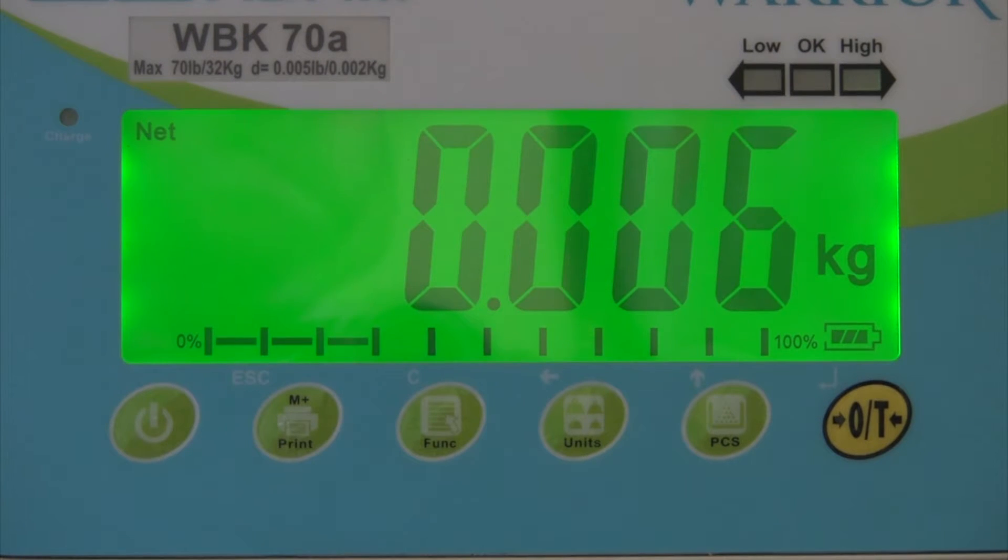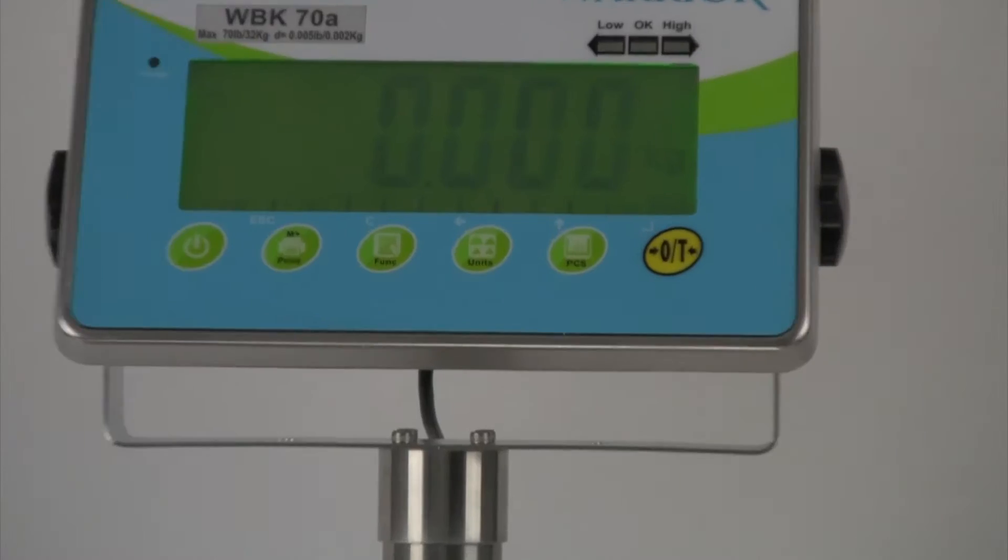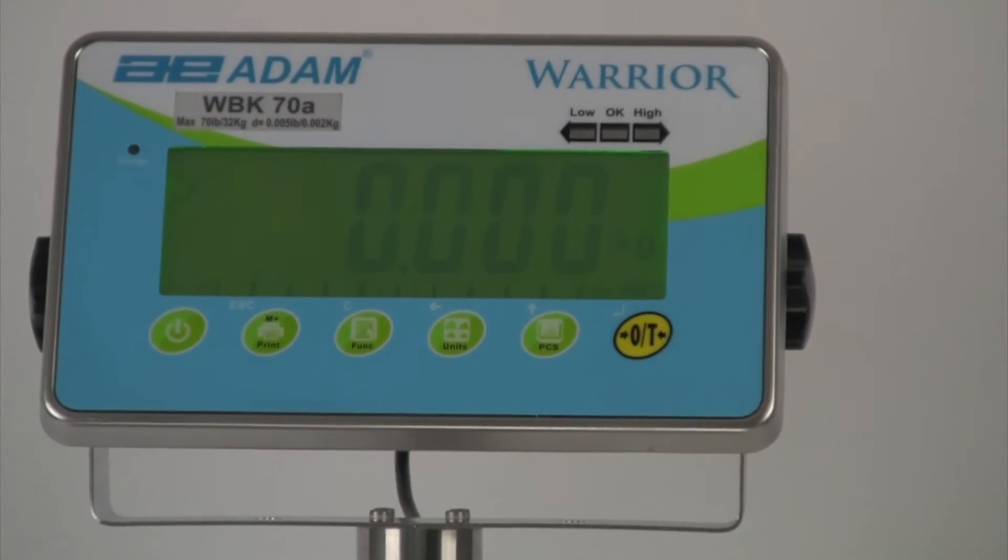Adam's unique capacity tracker clearly shows how much of the scale's capacity is used, regardless of what's shown on the display. This safeguard prevents against overloads and will keep track of the tare.